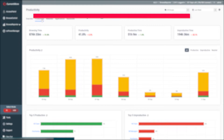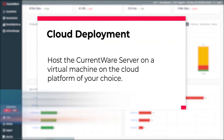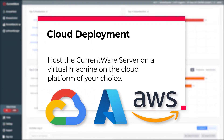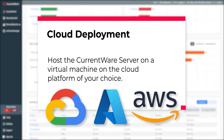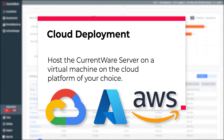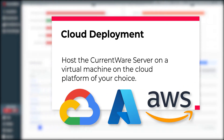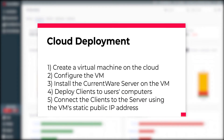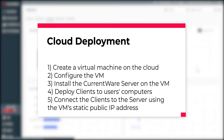Next, I will show you how to deploy CurrentWare to the cloud. This setup is similar to a standard on-premises deployment, except instead of using an on-site computer or server, you will create a virtual machine on the cloud platform of your choice. To deploy CurrentWare to the cloud, you will need to: configure the virtual machine to accept CurrentWare traffic, install the CurrentWare server on the virtual machine, deploy the CurrentWare clients on the computers you'd like to monitor, and configure the clients to connect to the server using the static public IP address of the cloud-based virtual machine.